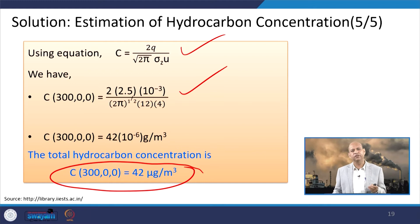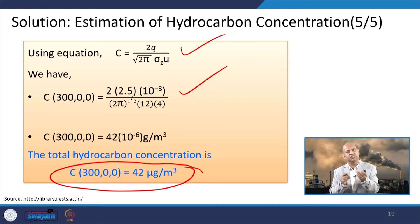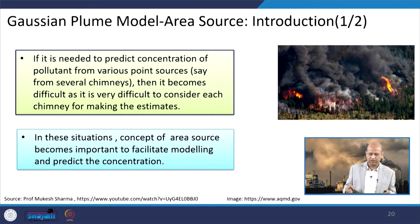This result can be compared against standards. If there is a background concentration, it can be added to get the total concentration, which is then compared with the national ambient air quality standard to determine whether it is exceeded.